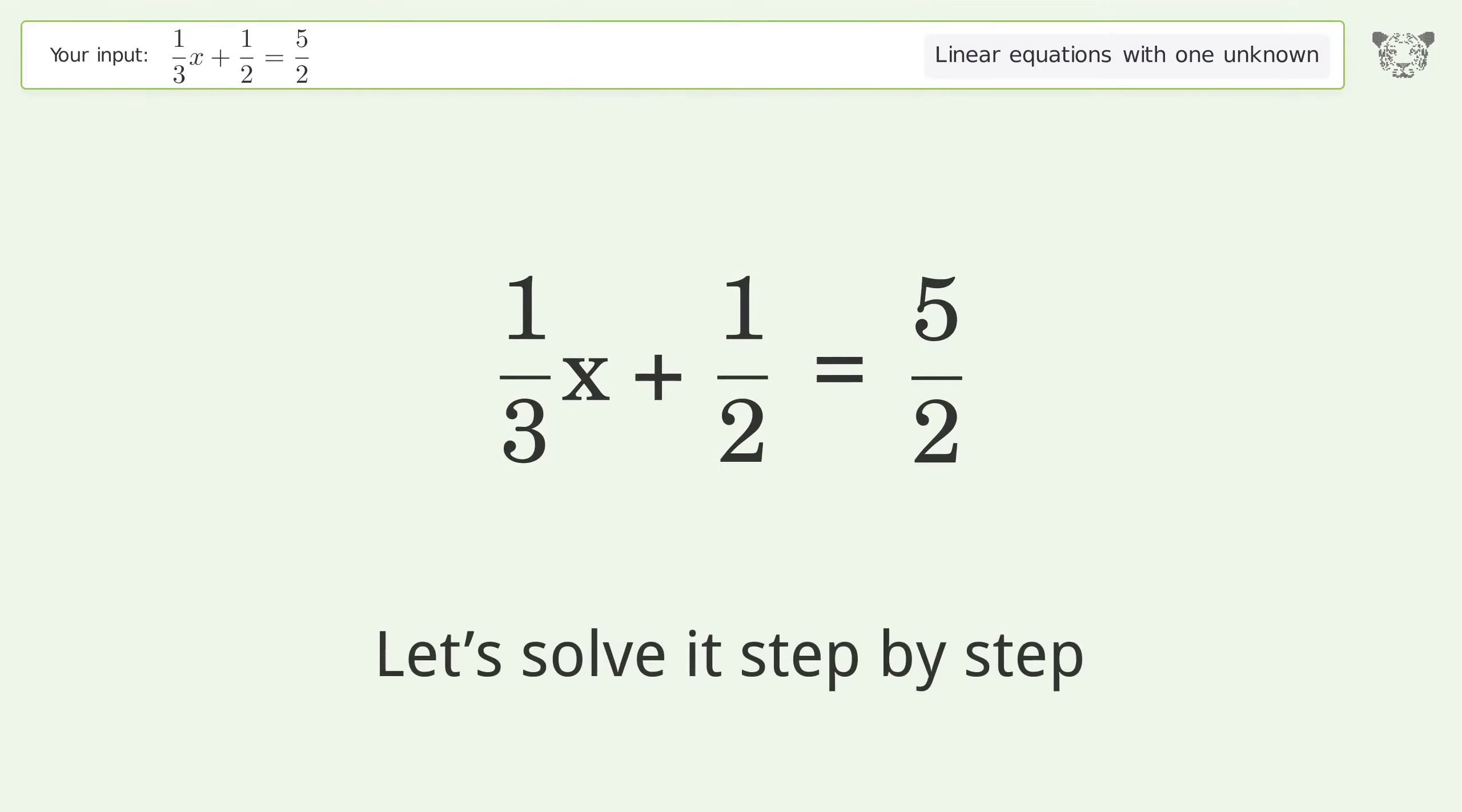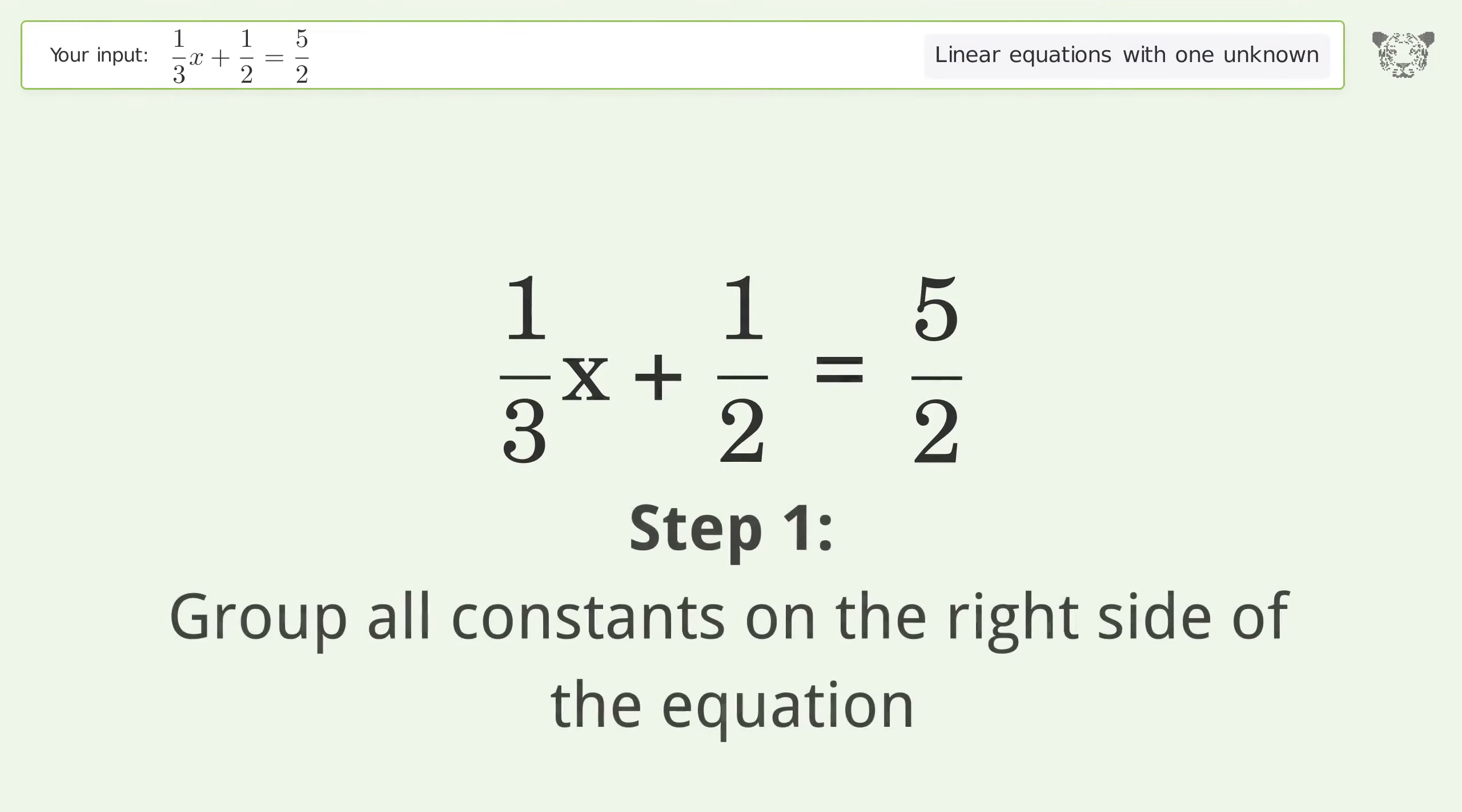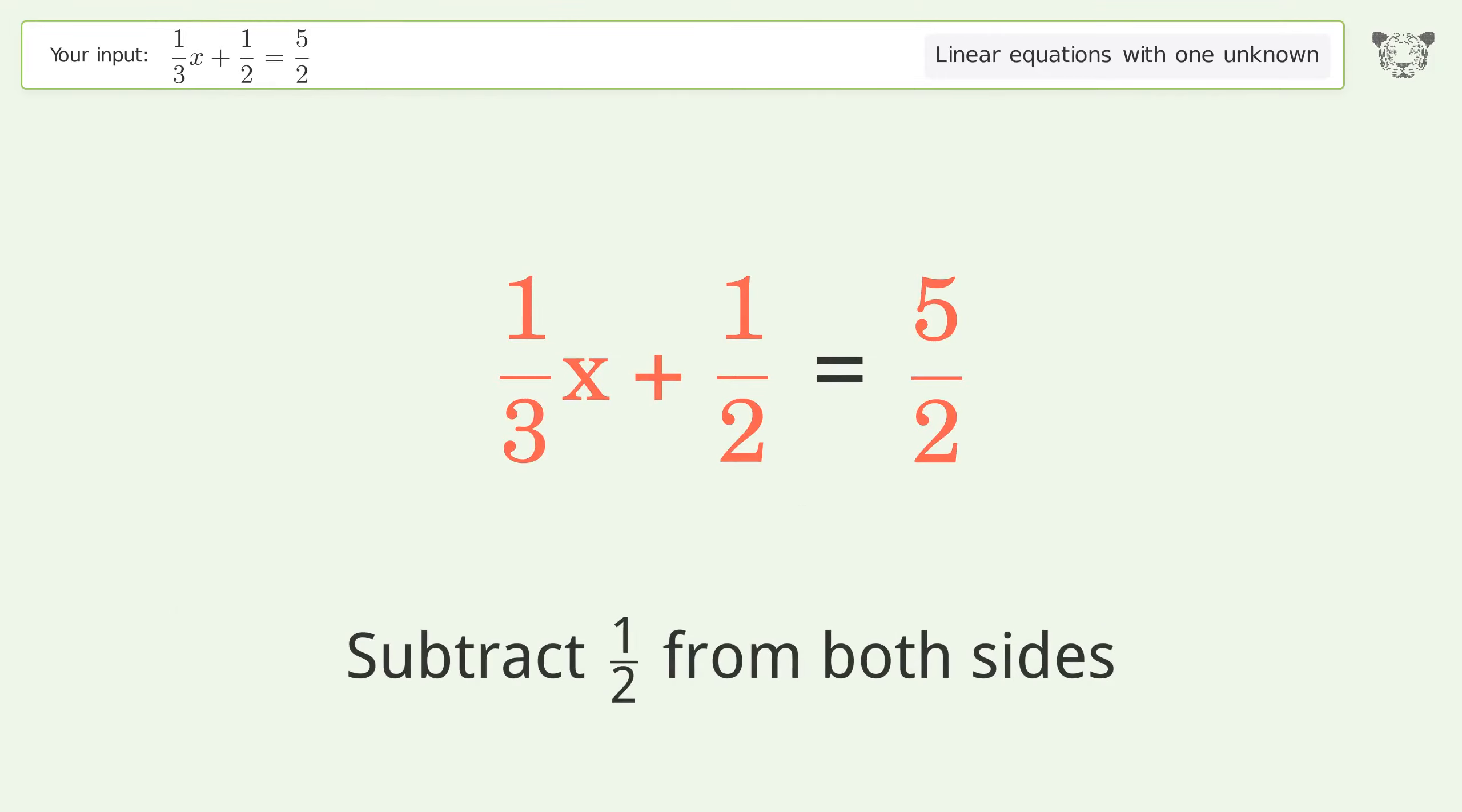Let's solve it step by step. Group all constants on the right side of the equation. Subtract 1 over 2 from both sides.